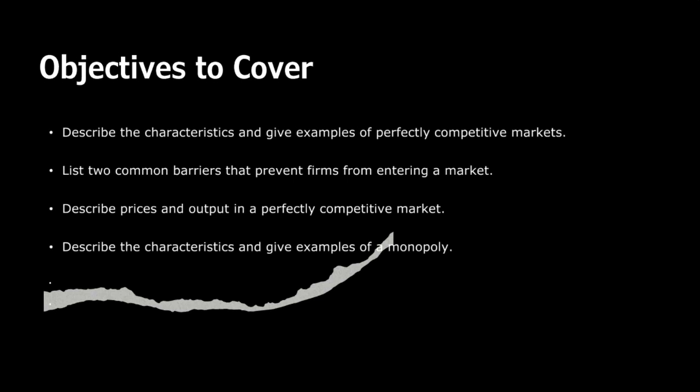Economies of scale occur when larger firms have a cost advantage over smaller ones. For instance, in the automobile manufacturing industry, the massive capital required for facilities and the benefits of producing at higher volume make it challenging for new entrants to compete effectively. Government regulations can also pose significant barriers — in industries like pharmaceuticals, strict regulations and the need for extensive drug testing can make it expensive and time-consuming for new firms to get approval for their products.